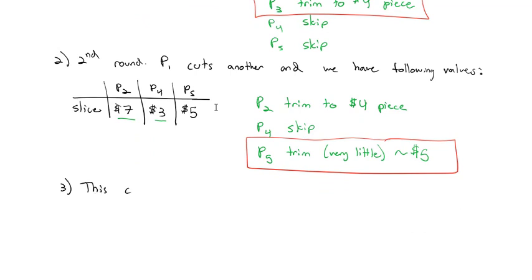This process continues until everyone has a piece, and everyone will be happy because everyone has had a chance at every piece or they've passed on it. That's the last diminisher method — it gives everybody a little more control over the outcome, not giving the lone divider the majority of the control. In our next video, we'll look at what we do if we can't cut things up, like dividing a house and a car — we need a better way with discrete things that can't be cut up.